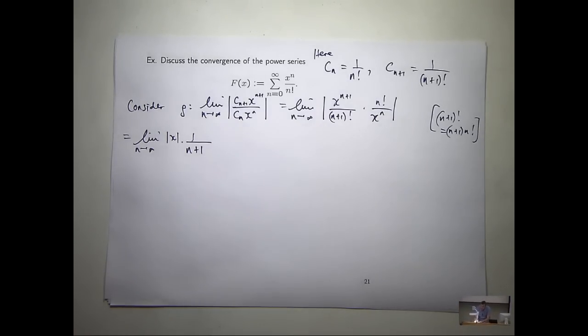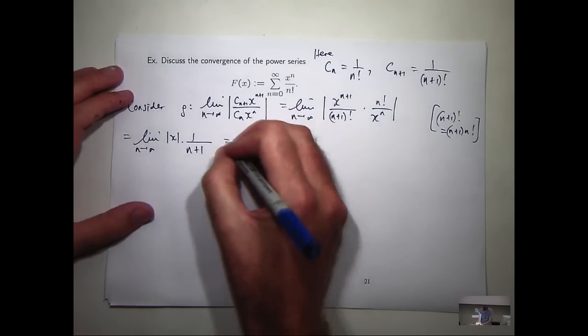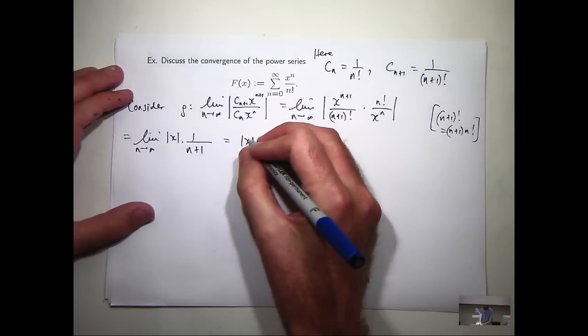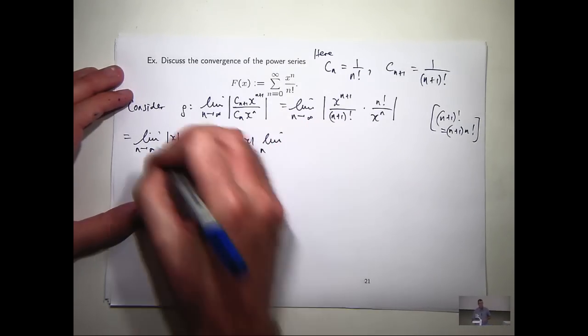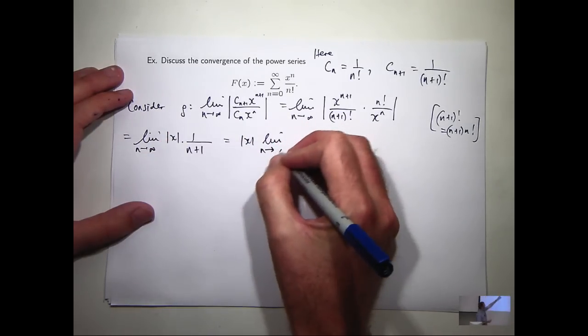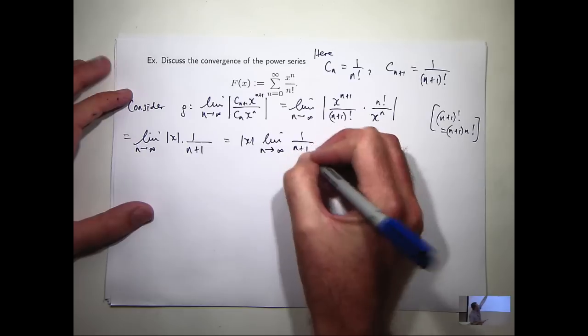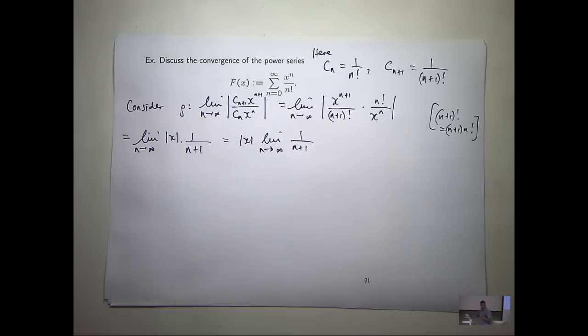The limit that we're taking, n's going to infinity. It's got nothing to do with x. So I can shift that x out and rearrange a little bit. All right, so what's my limit going to be? Zero.